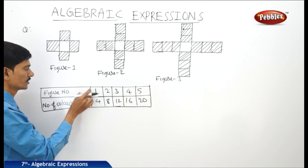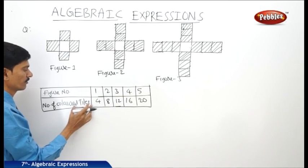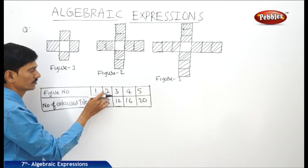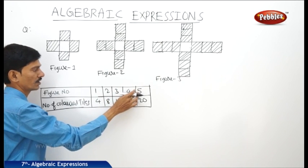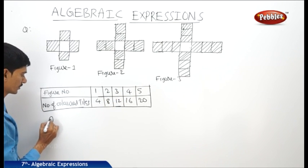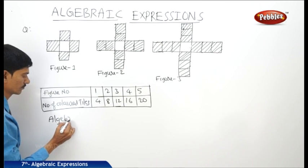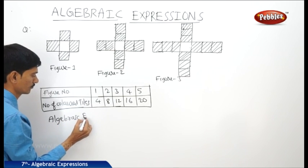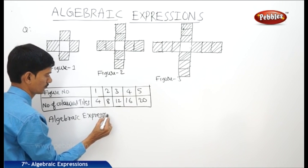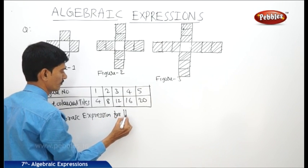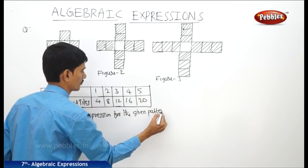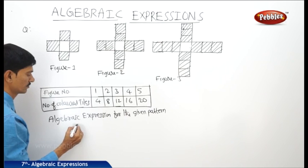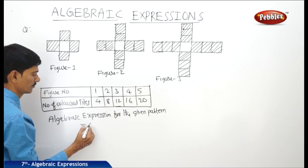If you observe the two rows — the figure number and the number of colored tiles — this is 4 times 1 is 4, 4 times 2 is 8, 4 times 3 is 12, 4 times 4 is 16, and 4 times 5 is 20. So the algebraic expression for the given pattern is 4n.